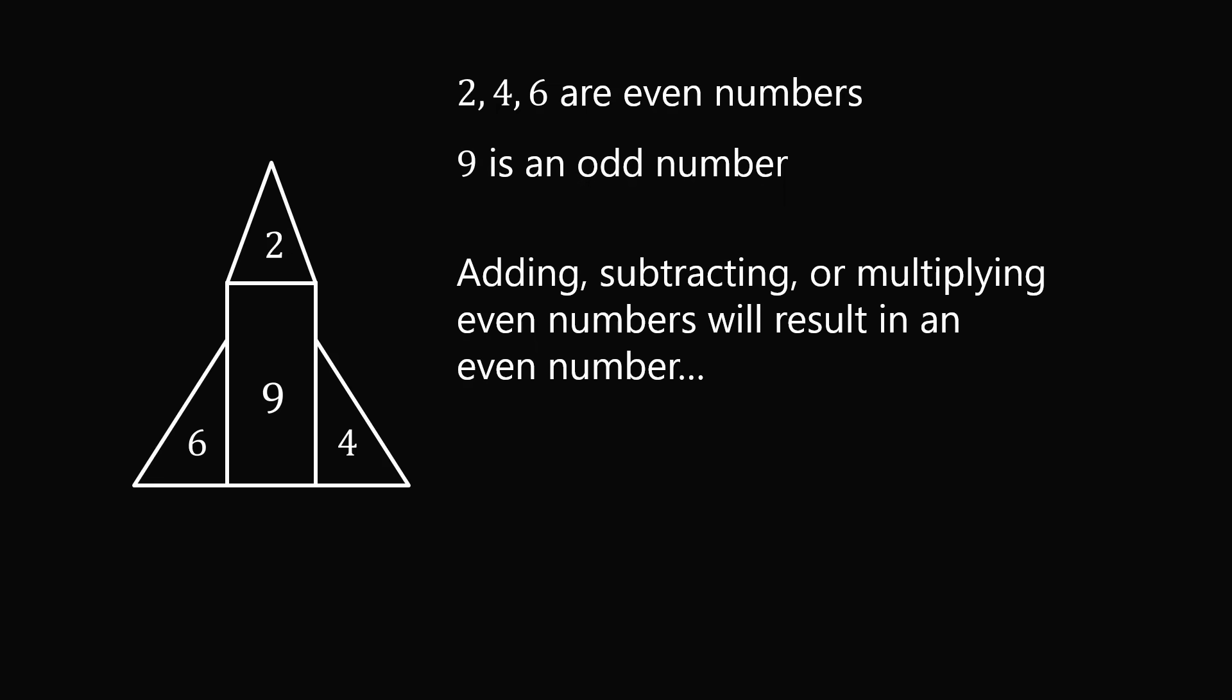So if you add, subtract, or multiply even numbers, you will always get an even number. So if you combine the numbers 2, 4, and 6, and you need to get 9 in some way, you have to do something else besides just adding, subtracting, or multiplying.